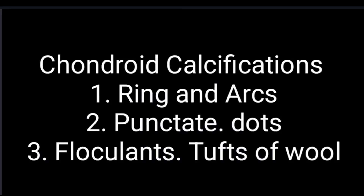Regarding the pattern of chondroid calcification: it may appear as ring and arc type in a lytic lesion. It may appear as punctate — multiple dots. Or it may be flocculent — appearing like tufts of wool. You may therefore come across punctate, arc and ring, or flocculent calcification patterns in enchondroma.